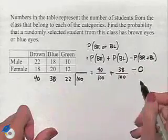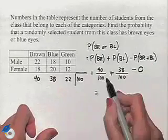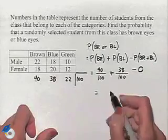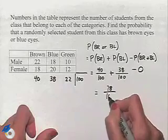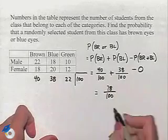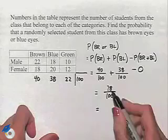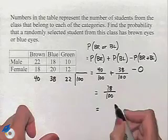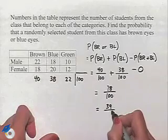And then we'll subtract off zero. Combining we have 40 plus 38, which is going to be 78, divided by our common denominator of 100. We can reduce that by noting that both numbers are even. Dividing by 2 will give us 39 out of 50.